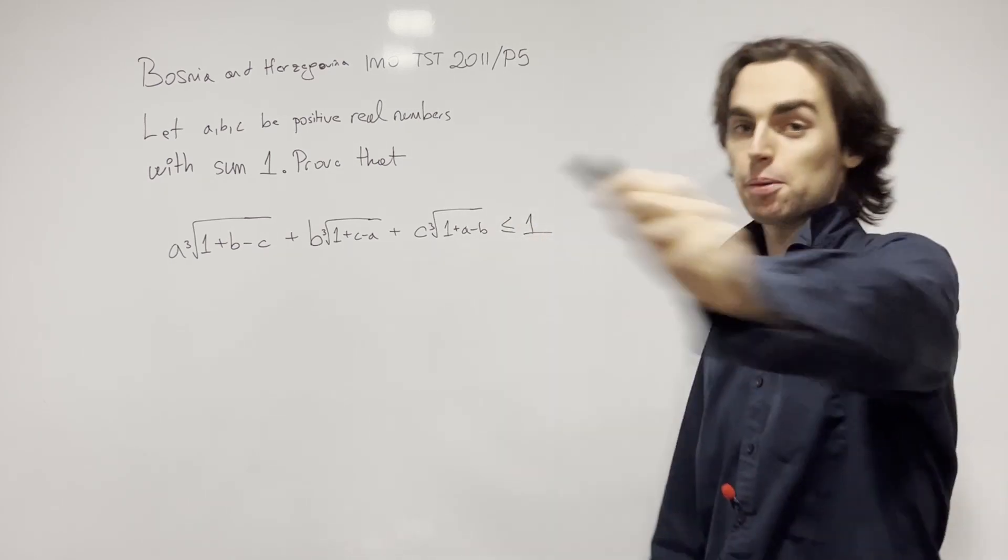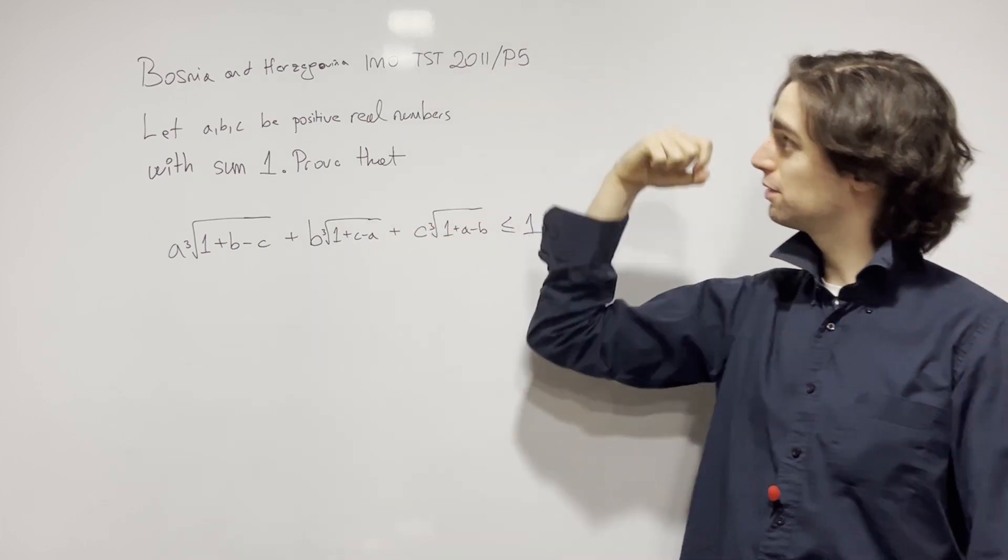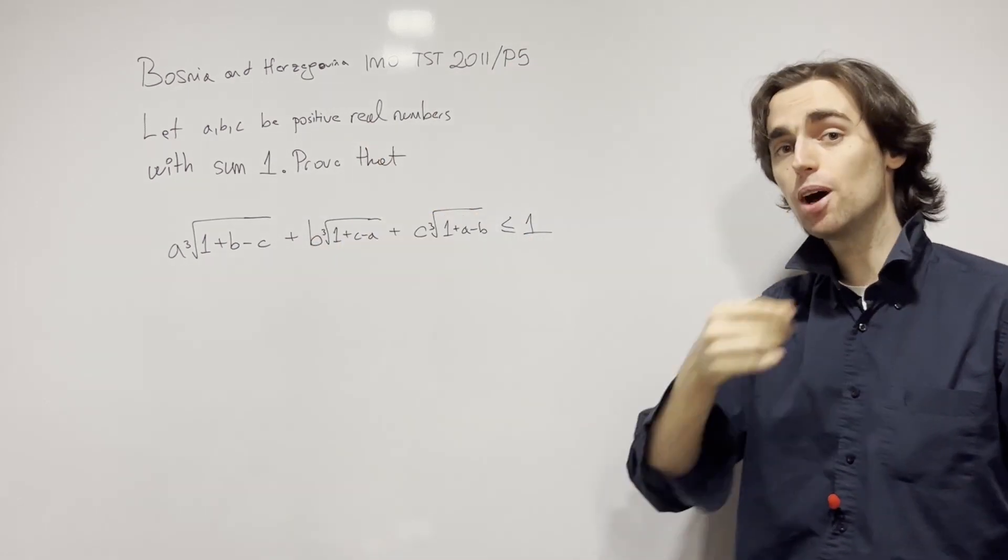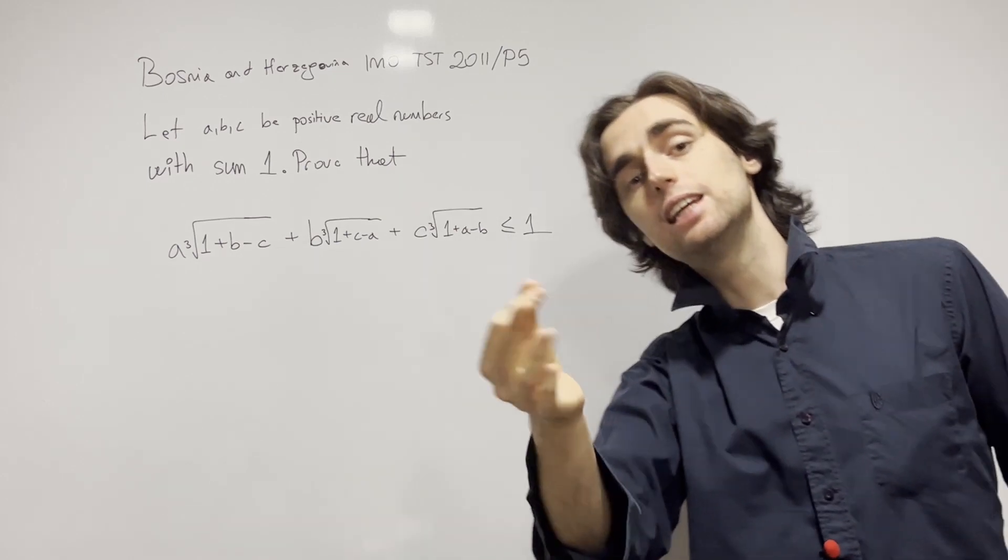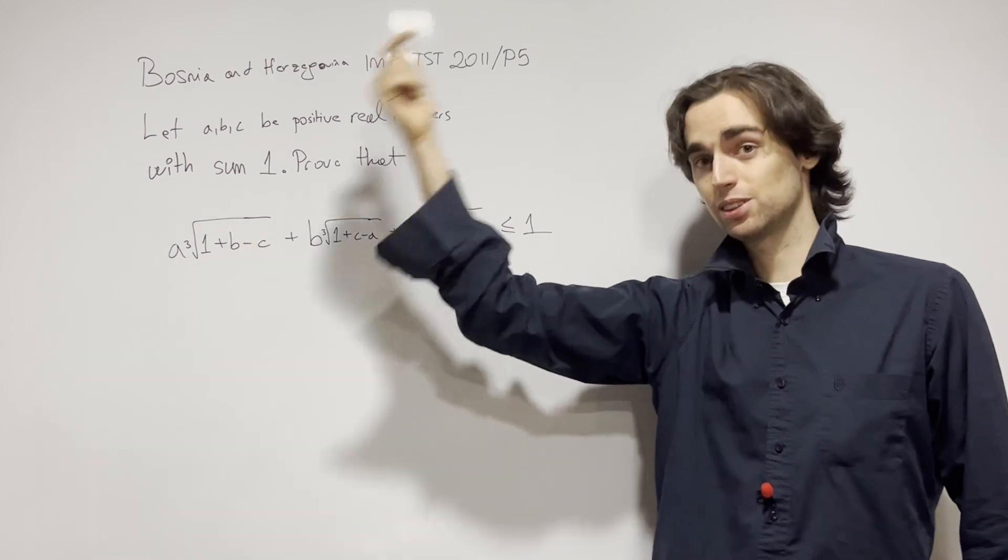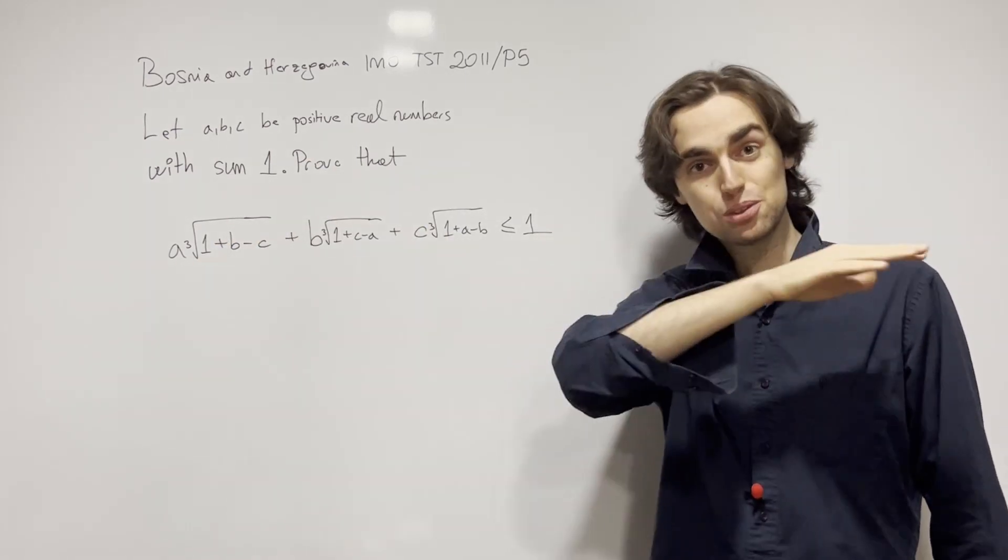Hello fellow problem solvers. We're going to be doing a problem from the Bosnia-Herzegovina IMO team selection test 2011 problem number 5. I suggest you try this problem out for a minimum of 10 minutes, ideally 45 to an hour, not more than 2 hours. If you'd like to go along with us, give it a go for the next 10 minutes. And now without further ado, let's begin.